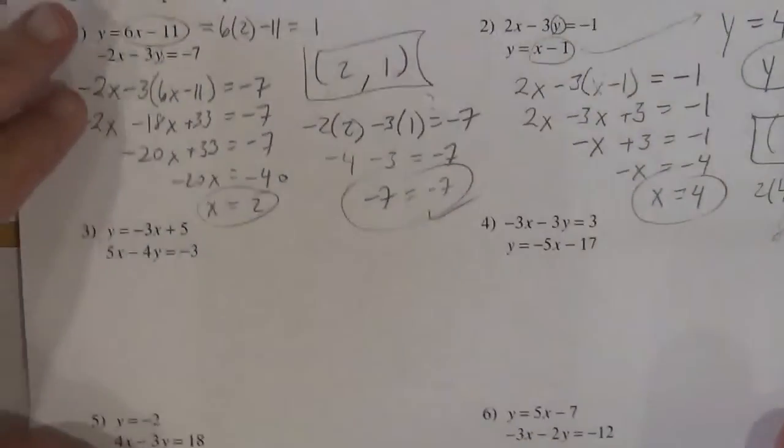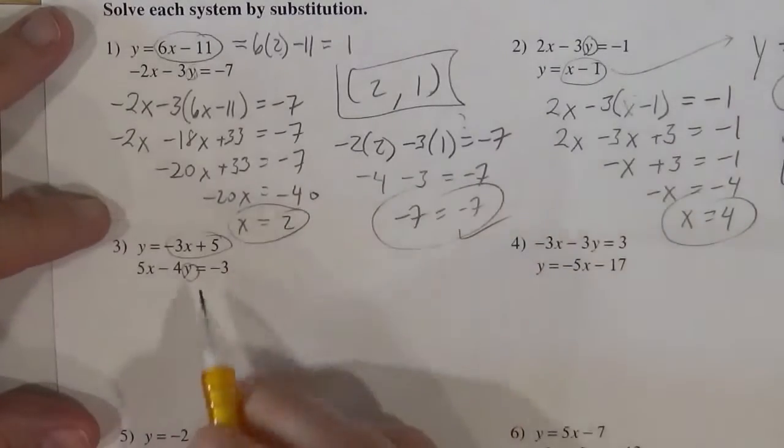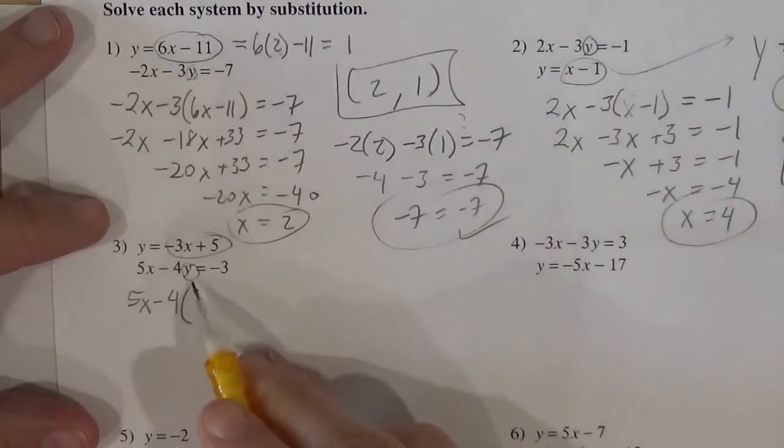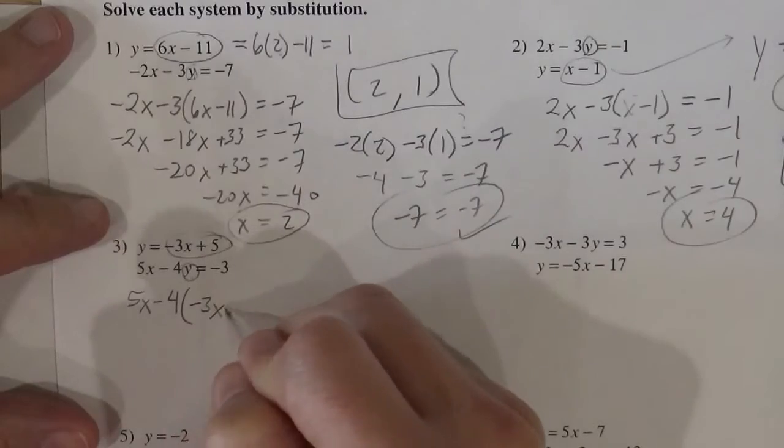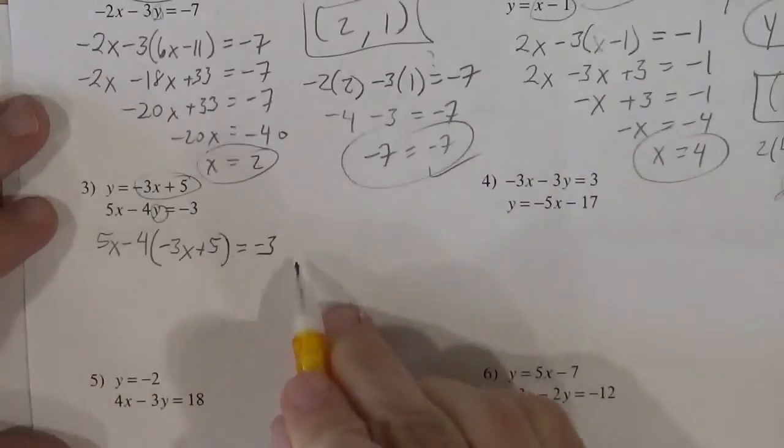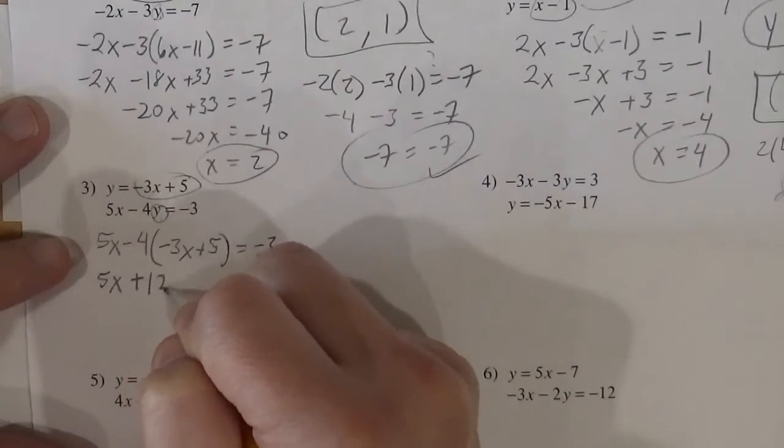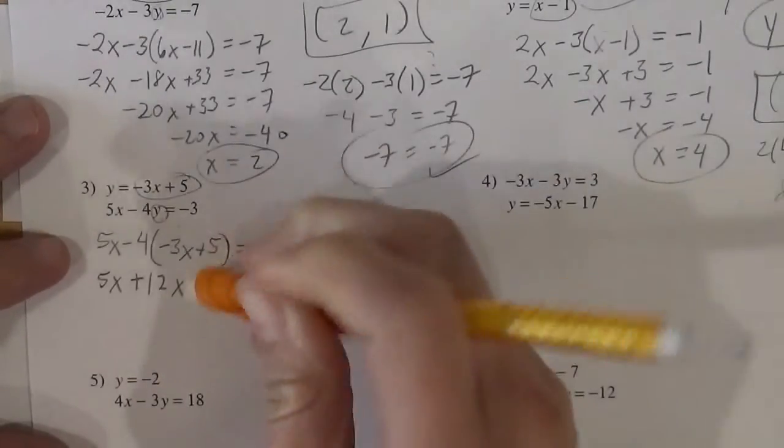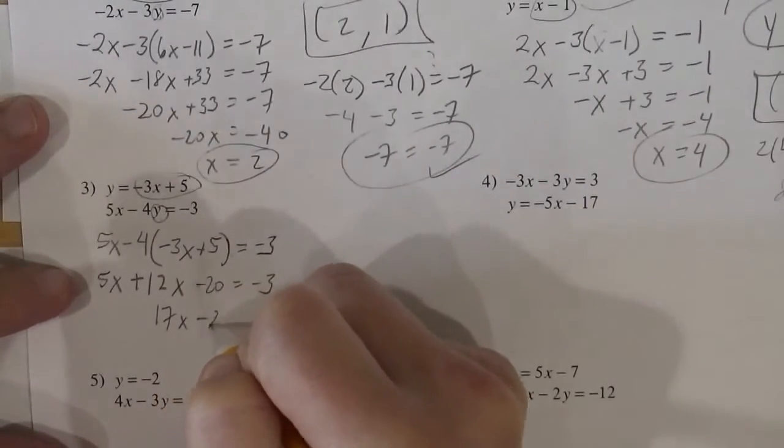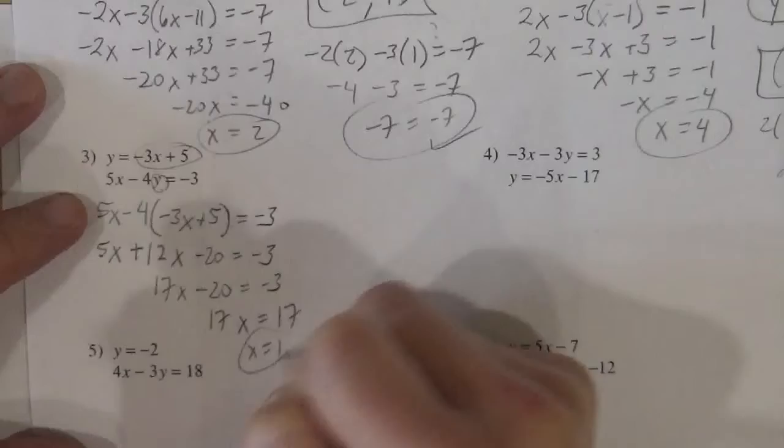Let's do it one more time. So the y equals this guy here. So I'm going to substitute the y in this with what it equals. So it's 5x minus 4. And instead of writing y, I'm going to replace the y with what that equals. I'm going to substitute that in. So now we have equation with just one unknown, the x. And I'll have 5x plus 12x minus 20 equals negative 3. 17x minus 20 equals negative 3. 17x equals 17. So x is 1.